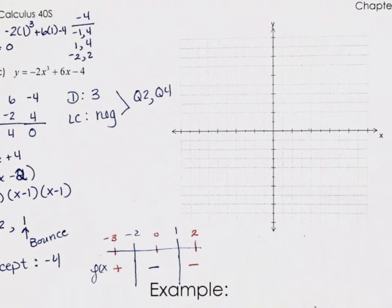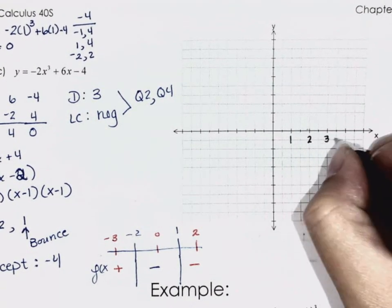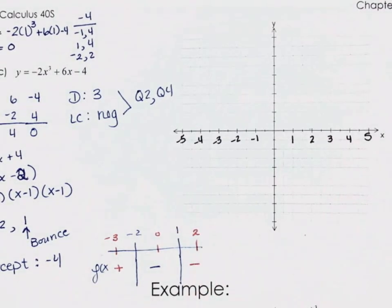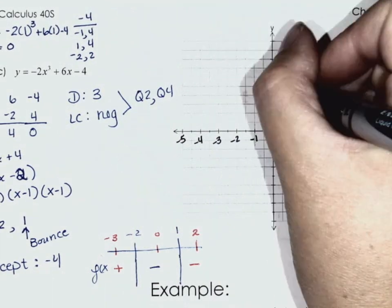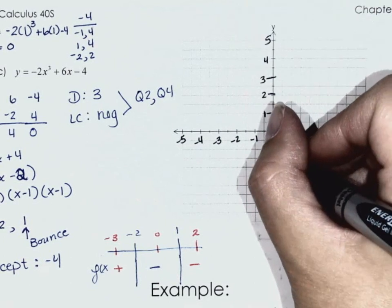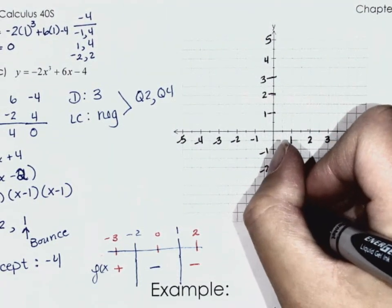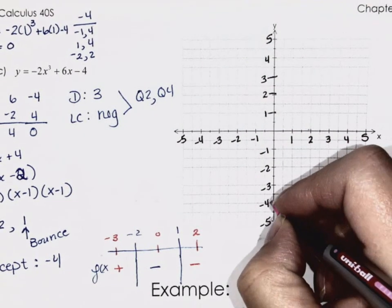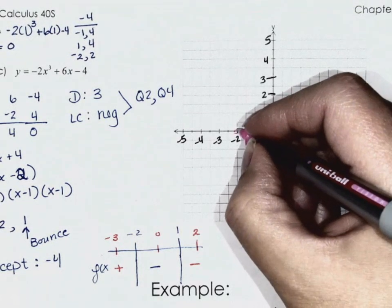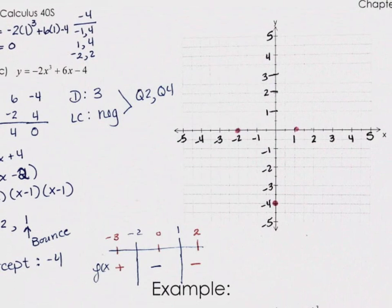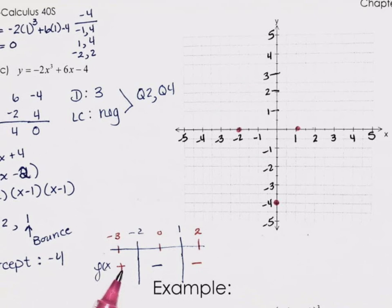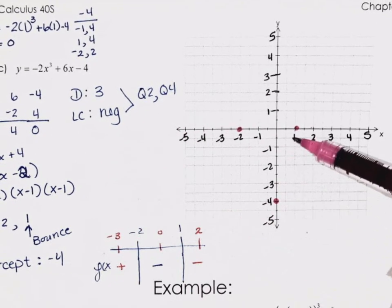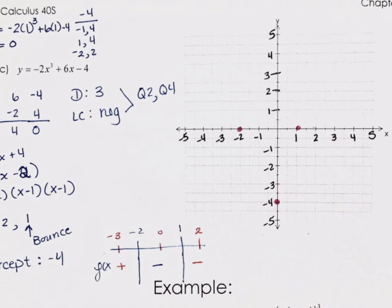Let's do increments — ones on everything this time should be fine. Put all my intercepts on: y-intercept at negative 4, x-intercept at negative 2, and x-intercept at positive 1. We know that y-values are starting positive, going down. We're ending in quadrant 4, and we anticipate a bounce. So we come up to positive 1, hit it, and come right back down.